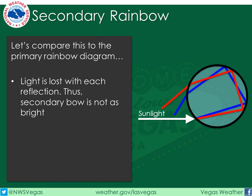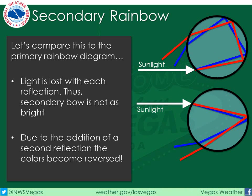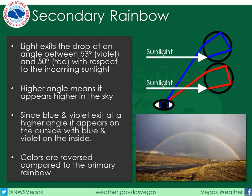Now let's compare this result to the diagram of the primary rainbow. With each reflection, light is lost due to scattering. Therefore, since the secondary rainbow requires two reflections, it always appears less vibrant than the primary rainbow. Also note that due to the addition of the second reflection, the colors become reversed. The angle between the red wave and the incoming sunlight is smaller with the secondary rainbow, so red will always appear lower in the sky — meaning the colors are reversed compared to the primary rainbow. Finally, all waves exiting in this manner exit at higher angles, so the secondary rainbow appears higher in the sky.